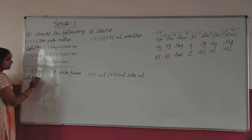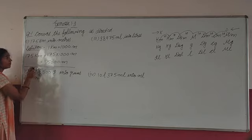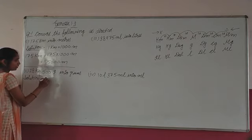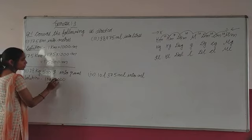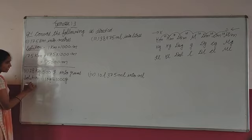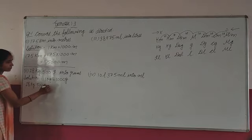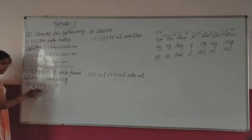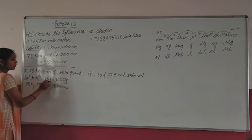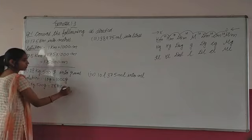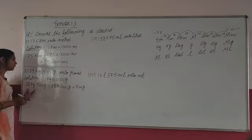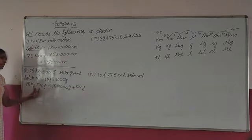But difference kya hai? Yahan pe grams bhi hai. To ye grams usme add ho jayenge. Pehle hum first question ki tarah change karenge kilogram to gram. 1 kilogram is equal to 1,000 gram. Aur hamare question mein statement kya hai? 28 kilogram 500 gram. To change kis mein karna hai? Grams mein. Ye to already gram hai. Isko — is kilogram ko gram mein change karna hai. So 28 multiply by 1,000, kyunki 1 kilogram mein 1,000 gram hai.